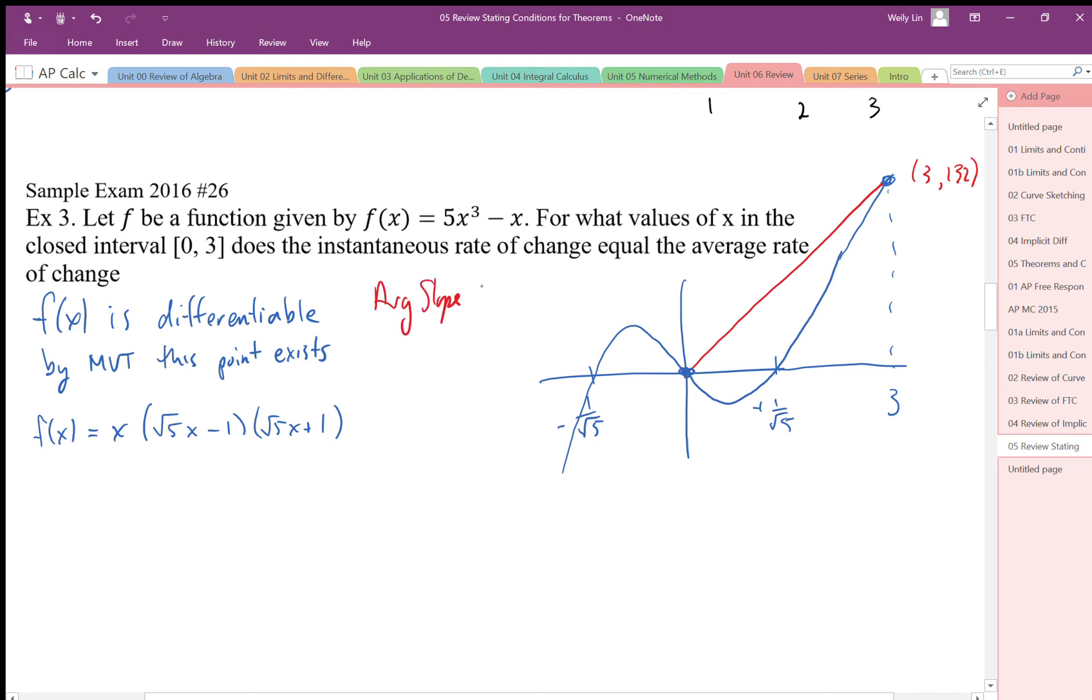So this is my average slope, which is going to be 132 over 3 which works out to be a slope of 44. So our slope is 44 for that average rate of change.